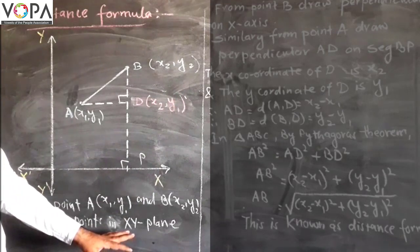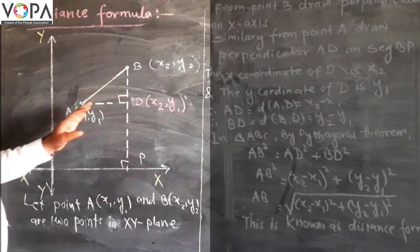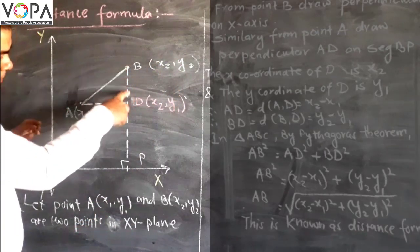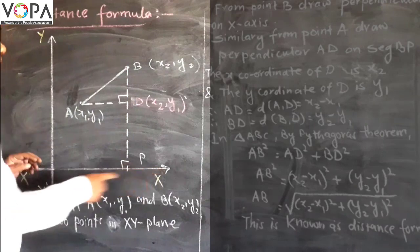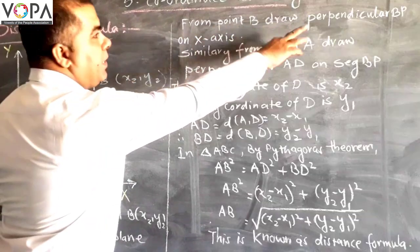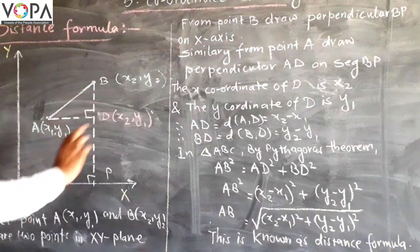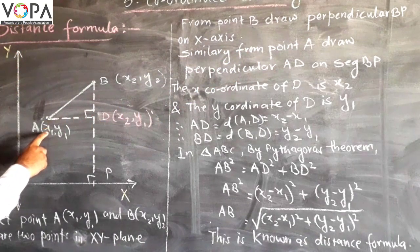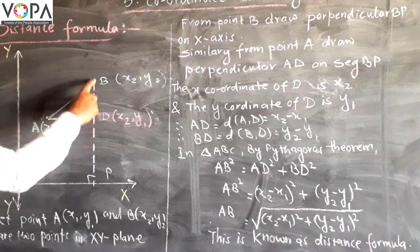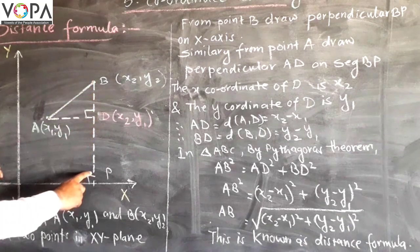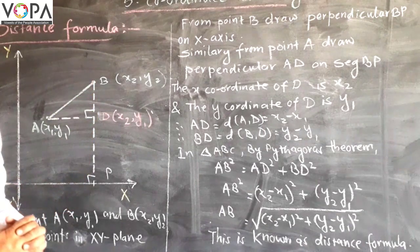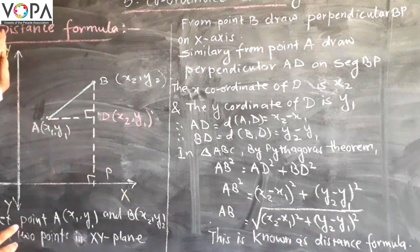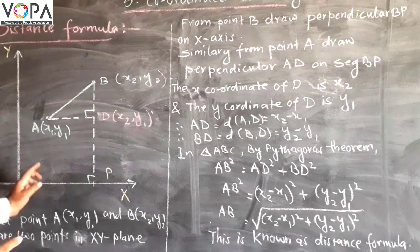Now from point B draw a perpendicular BP on the x-axis. Similarly from point A draw a perpendicular AD on BP. Now as BP is parallel to the y-axis, the x coordinate of B will be x2.